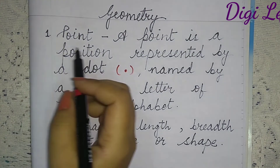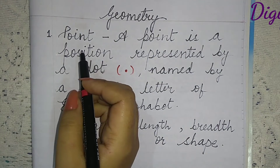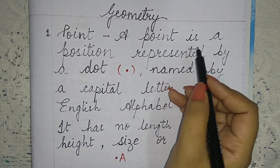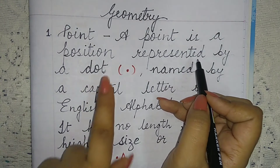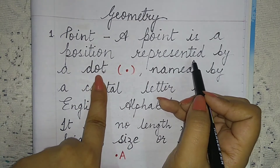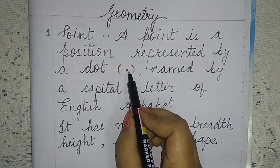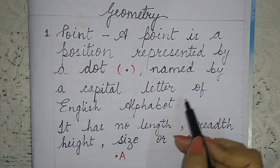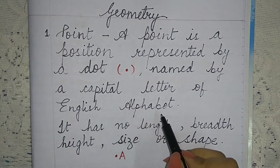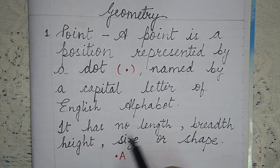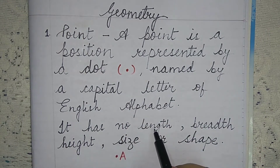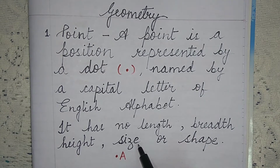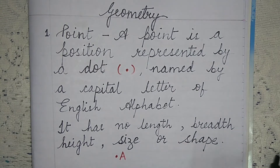First one, what is point in geometry? A point is a position represented by a dot, named by a capital letter of the English alphabet. It has no length, breadth, height, size and shape.